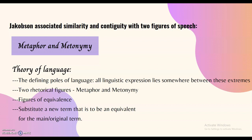Jakobson associated the two disorders with two figures of speech: metaphor and metonymy. Metaphor works on the basis of similarity, whereas metonymy works by contiguity or association between two concepts. A patient with similarity disorder would find metaphoric operations difficult, while one with contiguity disorder would find metonymic operations equally difficult. For Jakobson, metaphor and metonymy are two defining poles of language — all linguistic expression lies somewhere between these two extremes. They are rhetorical figures of equivalence used to substitute a term with a new equivalent term.